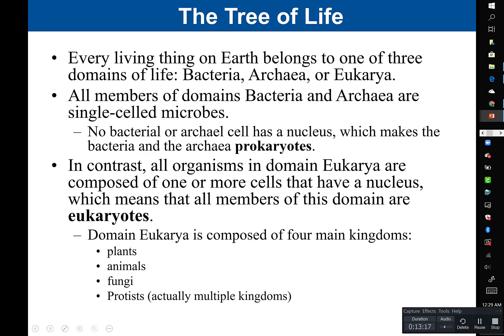In contrast, all organisms in domain eukarya are composed of one or more cells that have a nucleus, so they are eukaryotic. Bacteria and archaea are always unicellular, whereas eukarya can be either unicellular or multicellular. Historically, domain eukarya is composed of four main kingdoms: plants, animals, fungi, and protists.